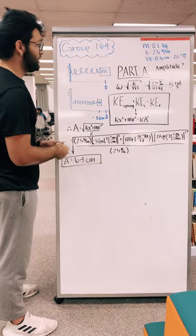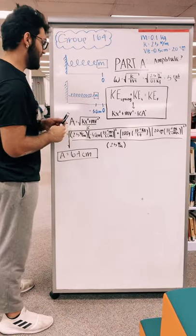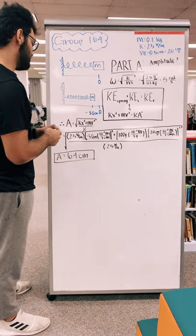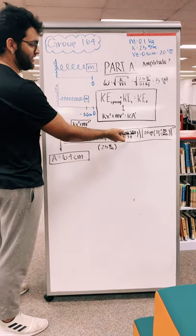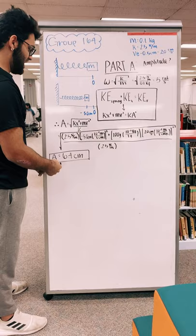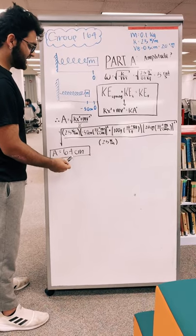After doing this we just plug in all the numbers we have and we make sure everything is in the right units—meters here and kilograms here and then meters again—and our amplitude comes out to be 6.4 centimeters.